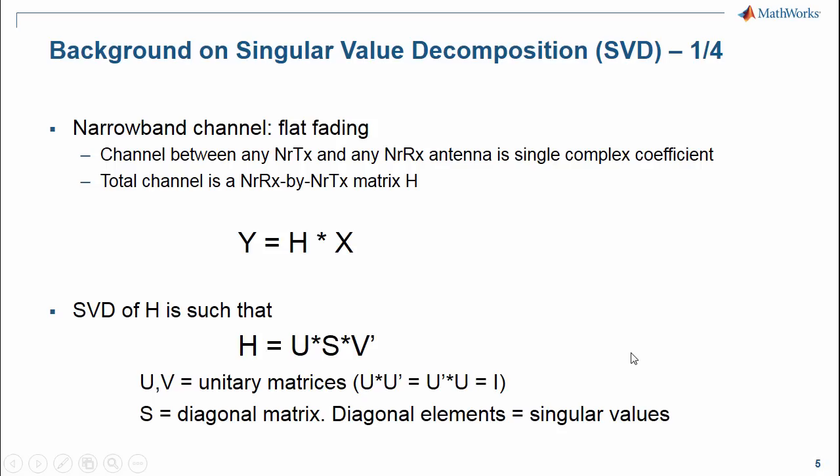LTE uses OFDM, which makes each subcarrier a narrowband channel with flat fading. The channel matrix H, as seen by the receiver, has a size number of received multiplied by number of transmit antenna.